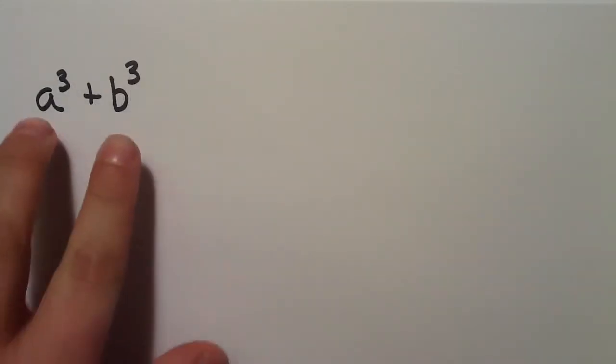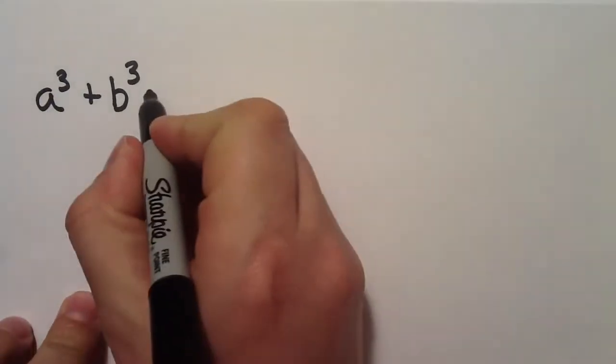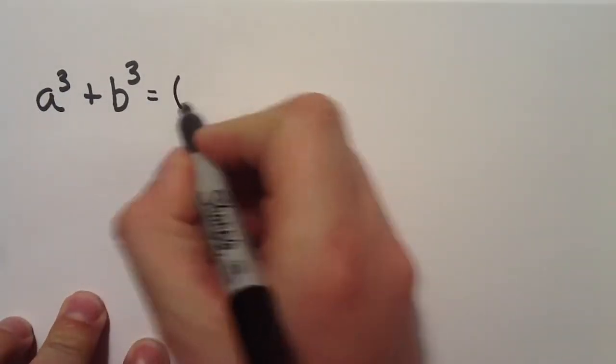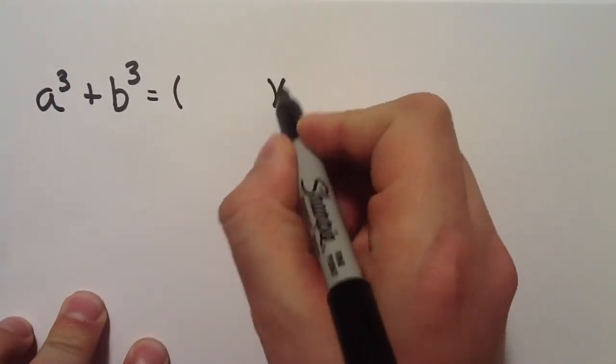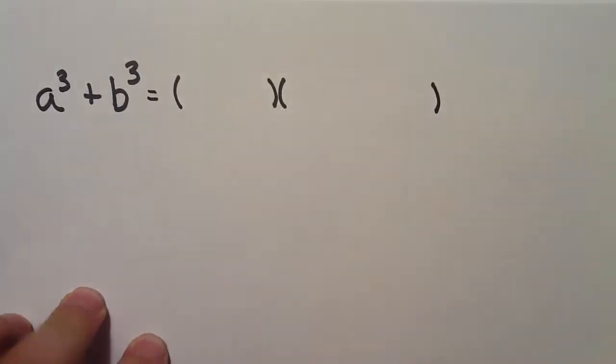When I see a two-term polynomial and I see the cubes in it, I set them equal to a small parenthesis, and I set it equal to a larger parenthesis.